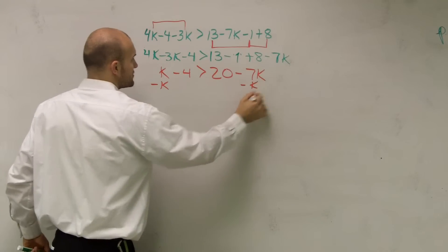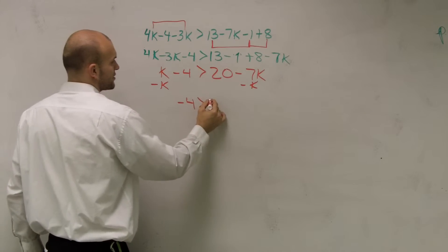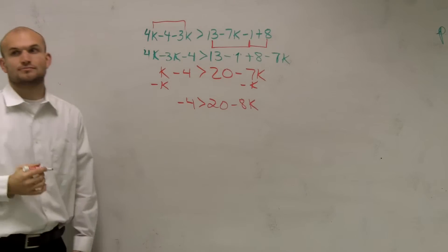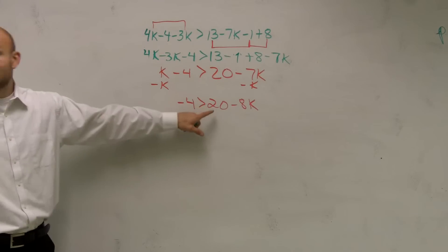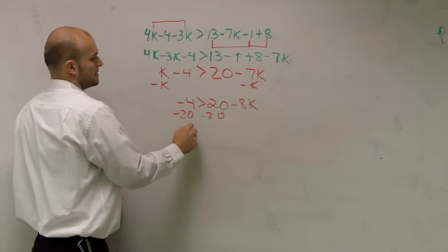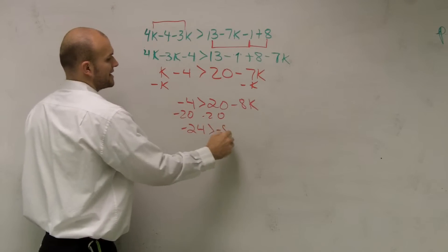So, let's subtract the K on both sides. I obtained negative 4 is less than or greater than 20 minus 8K. Now, I need to get rid of the 20, so I'll subtract 20.